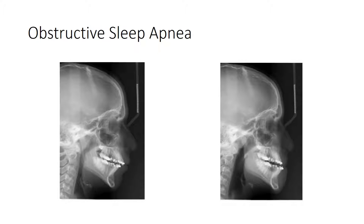Here are two lateral cephalometric radiographs of a 14-year-old girl with Stickler syndrome who had repair of an isolated cleft palate and developed obstructive sleep apnea, likely due to mandibular hypoplasia associated with her condition and maxillary hypoplasia from her underlying syndrome and palatal repair. The difference between the two radiographs is that in the one on the right the patient is protruding her lower jaw, placing the mandible in a more anteriorly positioned location. The difference in caliber of the airway demonstrates the importance of mandibular size and position in maintaining the oropharyngeal airway.